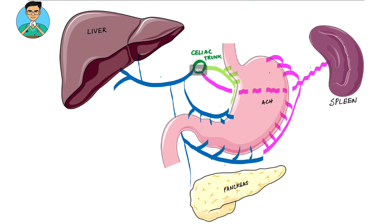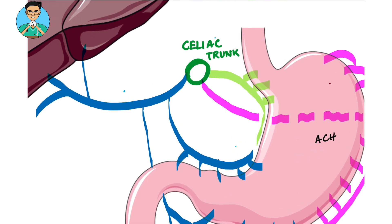The entire story starts from the first anterior branch of abdominal aorta, that is the celiac trunk. This celiac trunk gives off three main branches highlighted by blue color, purple color, and green color.